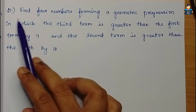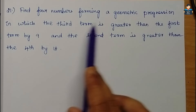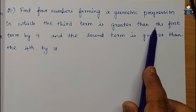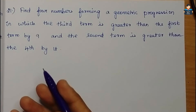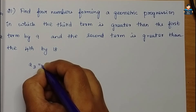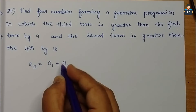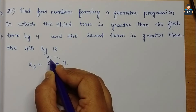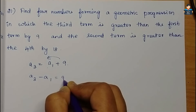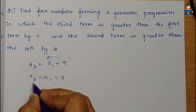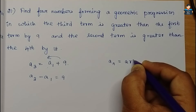Question 21: Find four numbers forming a geometric progression in which the third term is greater than the first term by 9. So a3 - a1 = 9. Using a3 = ar², this gives a(r² - 1) = 9. This is equation 1.